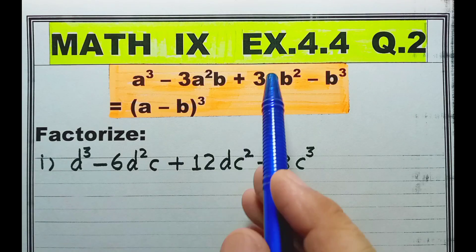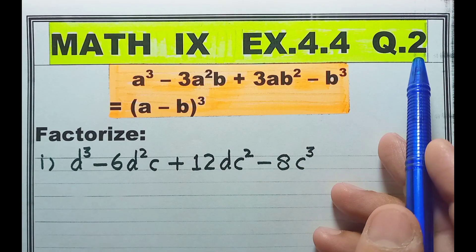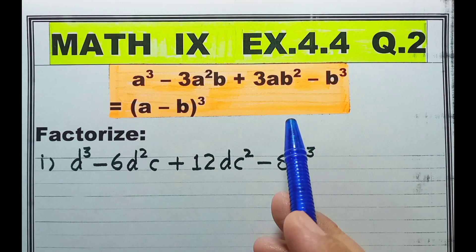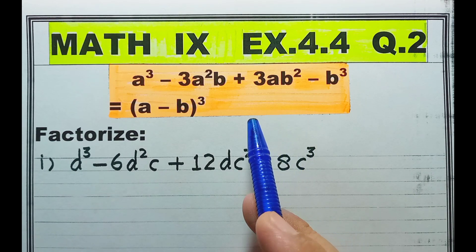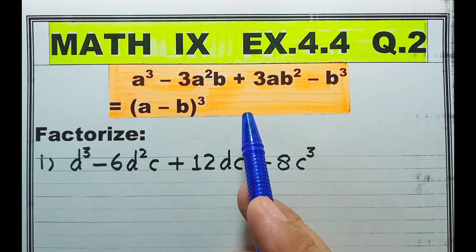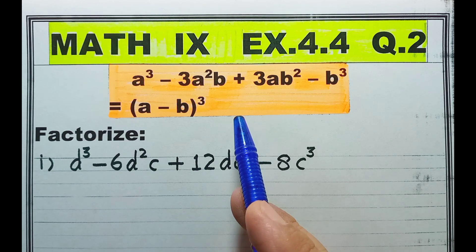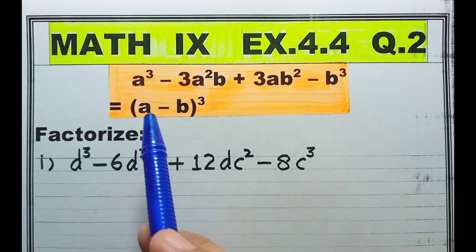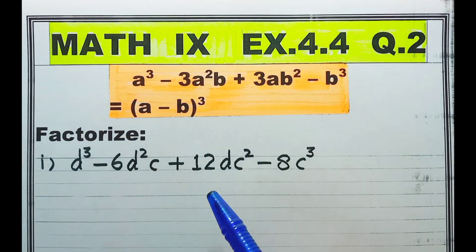Welcome back. Exercise 4.4, question number 2. This is the formula we are going to apply in all the parts of this question. Formulae ko achi tarah se samajh lienge, taakhe mind mein baith jaye. How many terms are here in this formula? 1, 2, 3, 4. Four terms.